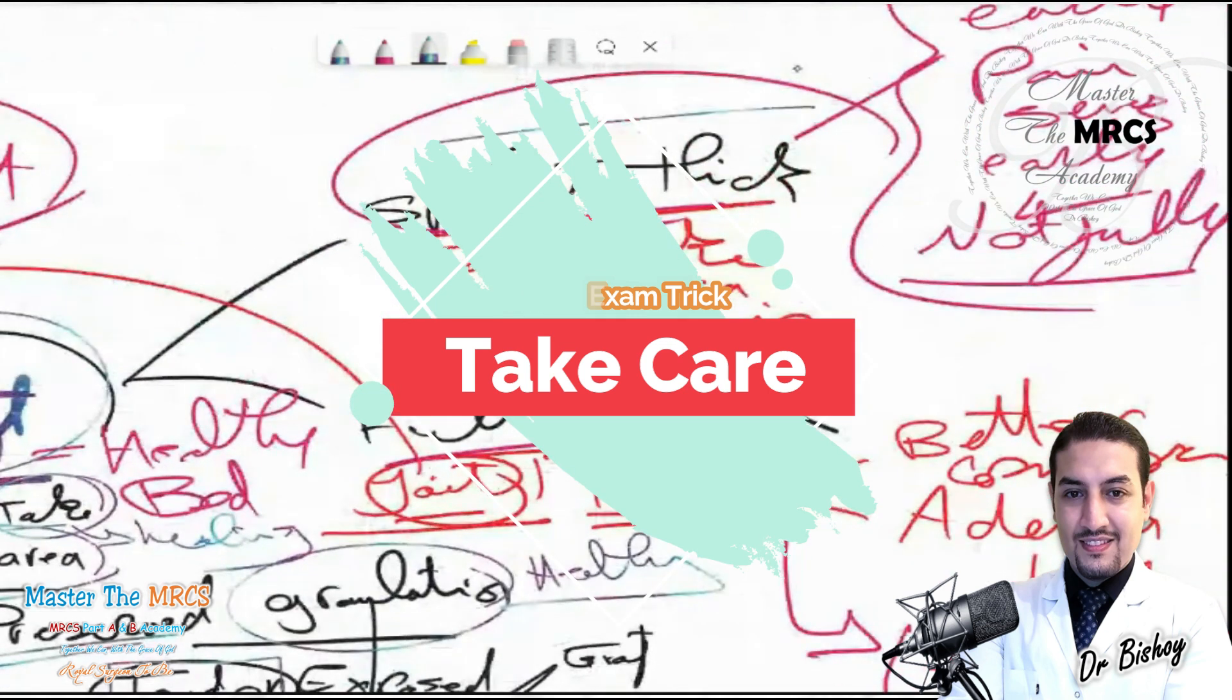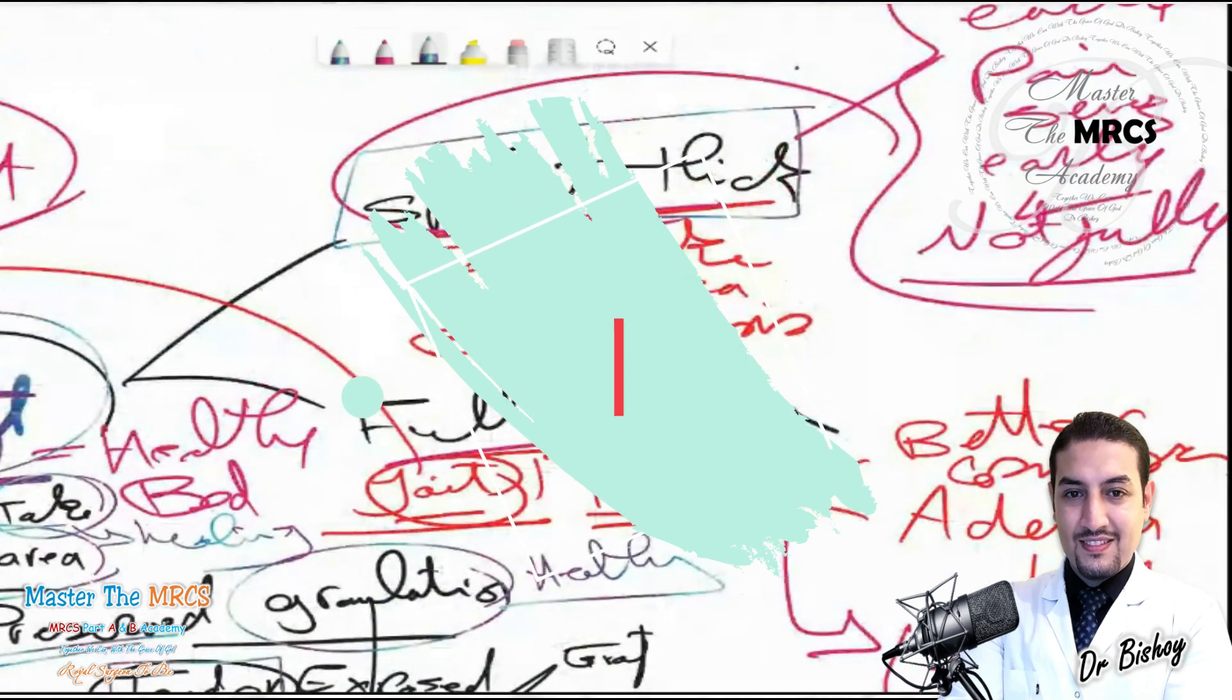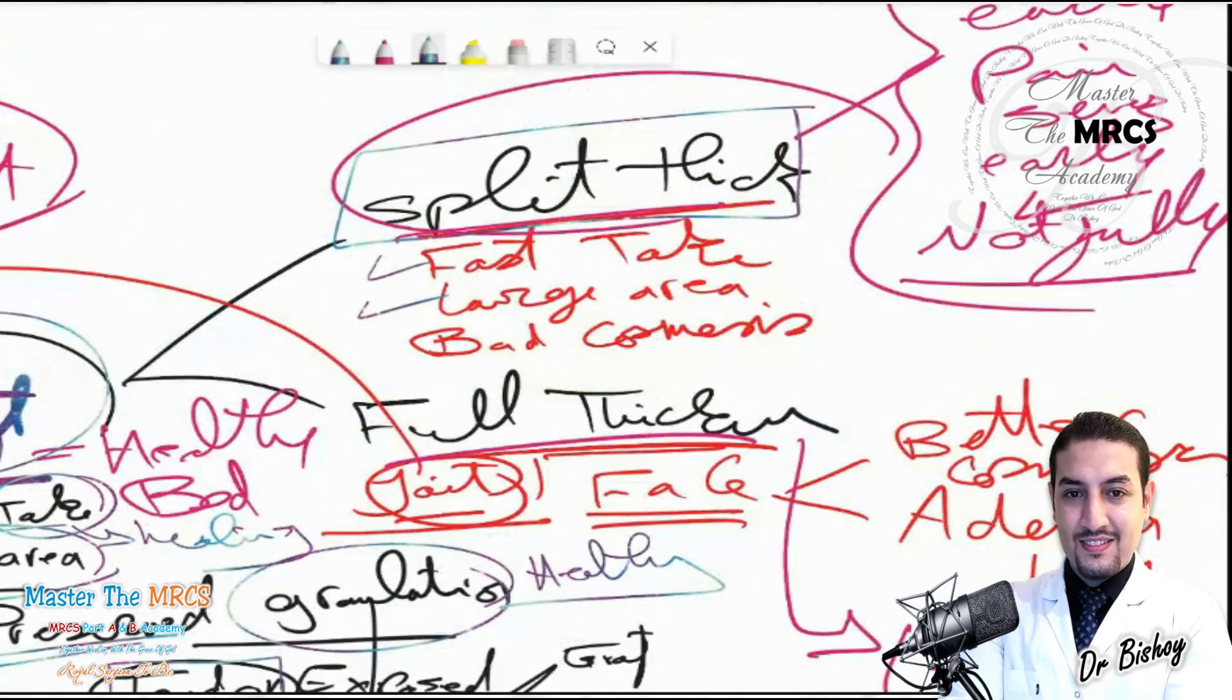Split thickness can cover large area, but take care it has bad cosmesis. So use the full thickness when you have small area, critical like the joint and the face, because it has better cosmesis and preserves the adenexa.